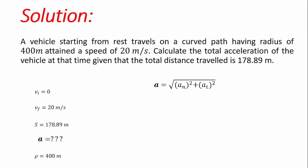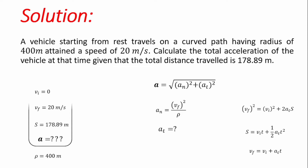The tangential component is the acceleration with which the vehicle moves along the curved path. The normal component equals the square of the final velocity divided by the radius of curvature. The tangential component is found using kinematic equations for linear motion. We have three such equations. Looking at the first equation, it contains final velocity, initial velocity, time, and acceleration — but time and acceleration are both unknown, so we cannot use it.